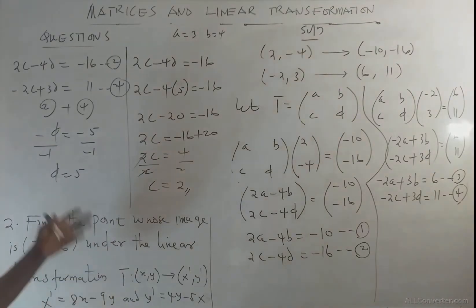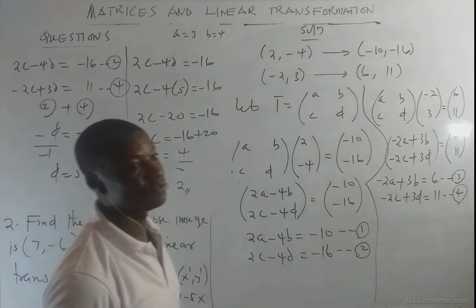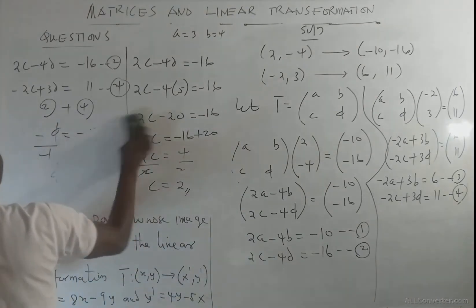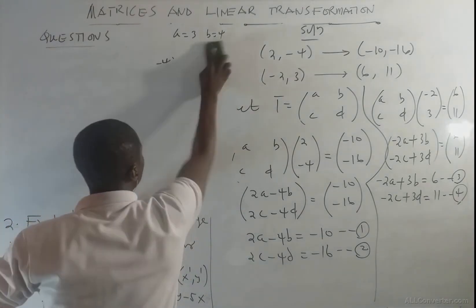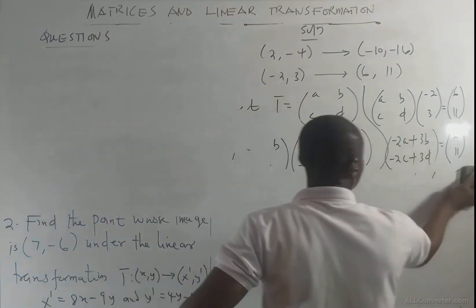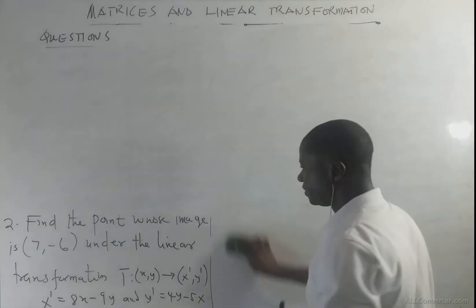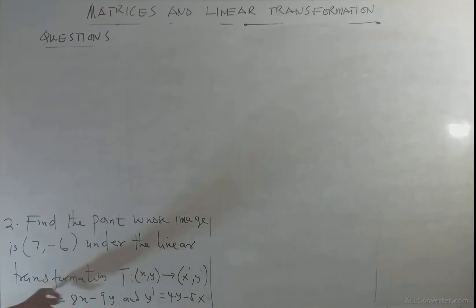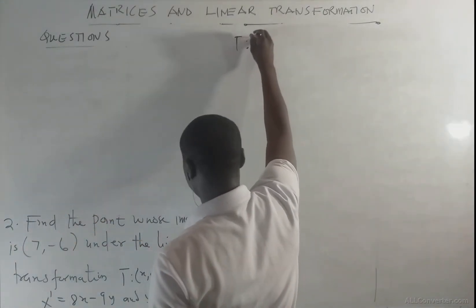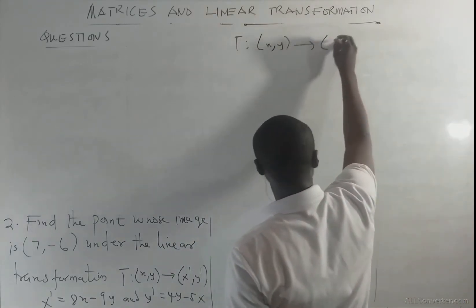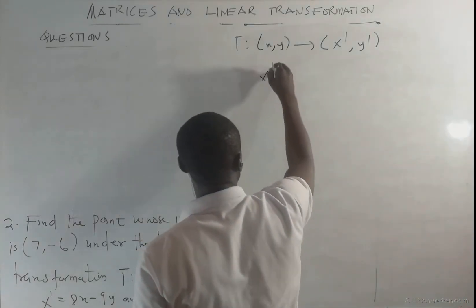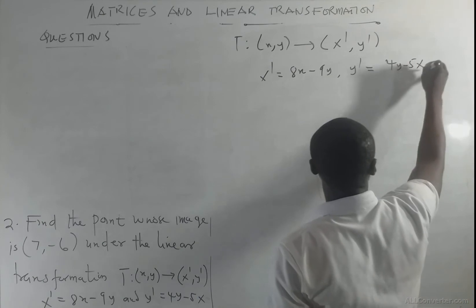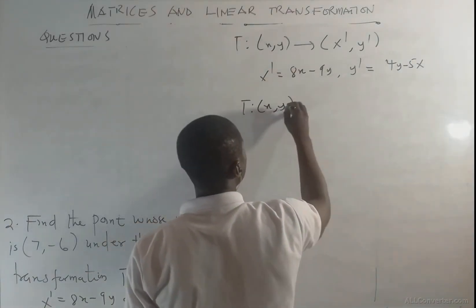That is how to solve the first part of the question. Now let's continue with the second question. We have to find the point whose image is (7, -6) under the transformation T, where T of (x, y) maps to (x', y').